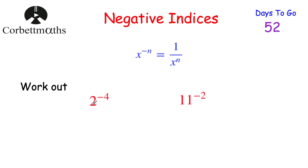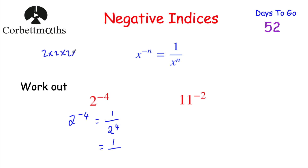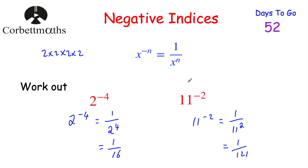Here are a couple of questions for you to try. Can you work out 2 to the power of negative 4, and 11 to the power of negative 2? Feel free to pause the video and try these now. For 2 to the power of negative 4: negative power means 1 over 2 to the power of 4. 2 times 2 times 2 times 2 — that's 4, then 8, then 16 — so the answer is 1 over 16. For 11 to the power of negative 2: that's 1 over 11 squared. 11 squared is 121, so the answer is 1 over 121.